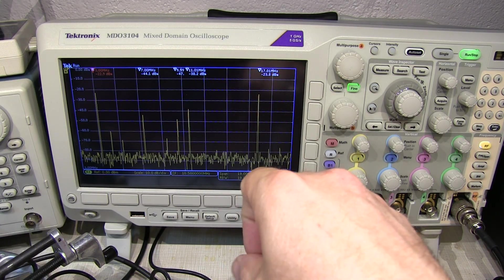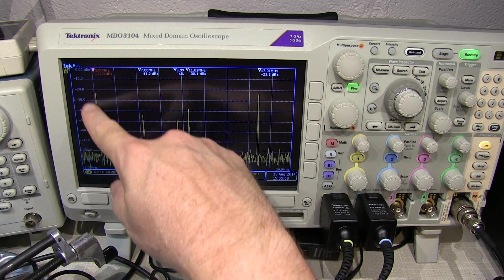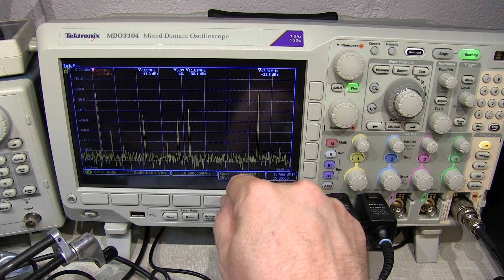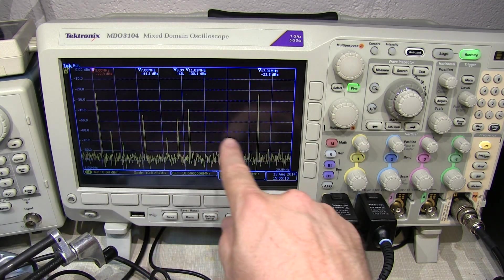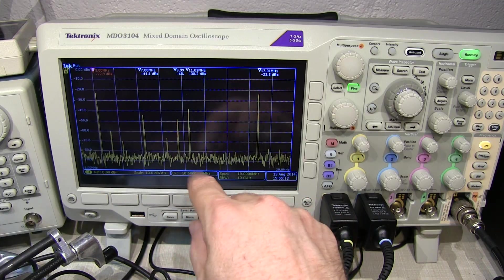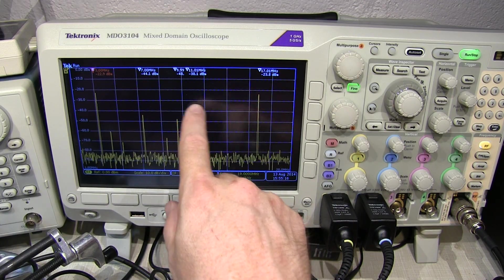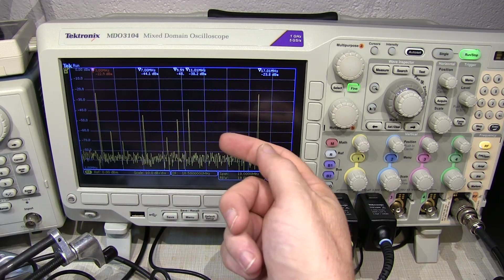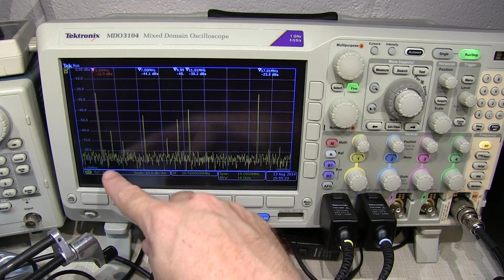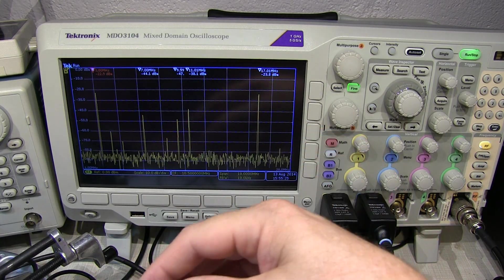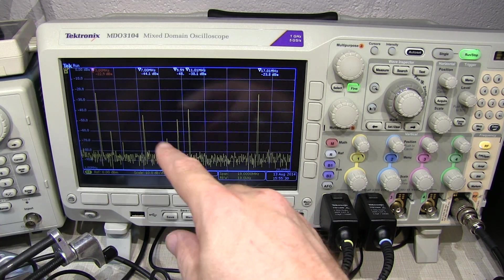Now, one thing that's important with these diode ring mixers is that the IF output, even though you may only be interested in one component or the other, you want to ensure that the IF output has got a good termination for all of the components that are coming out of it. So a nice broadband termination before you go do a filter. Otherwise these unwanted components that are here might reflect back into the mixer and reconvert to other components. So now this thing is again, wide open. We didn't do any shielding. We didn't do anything special to really improve the isolation or match the diodes.